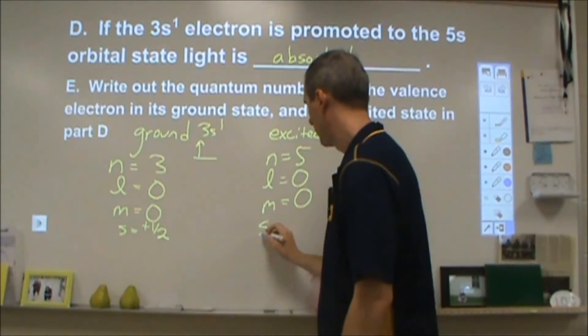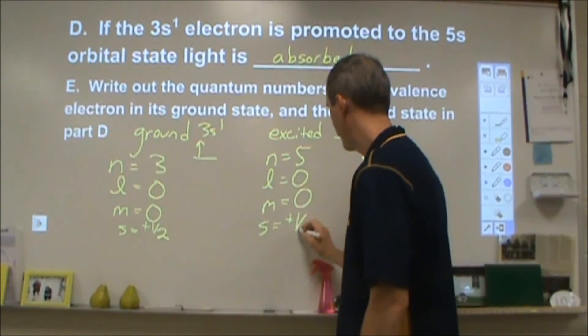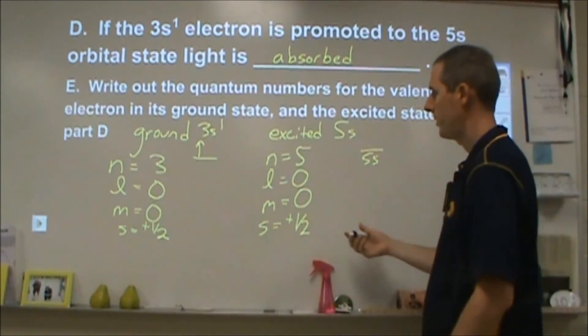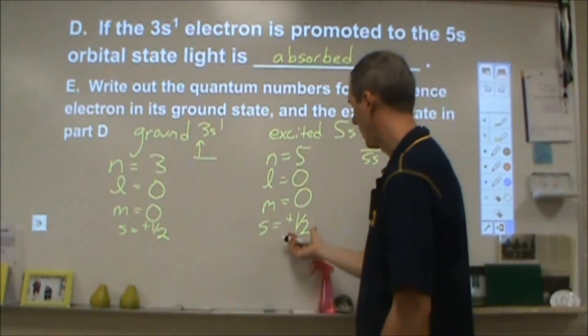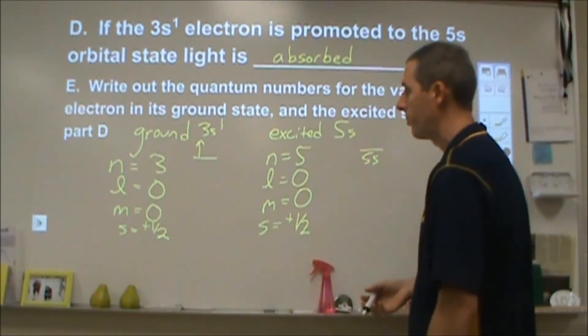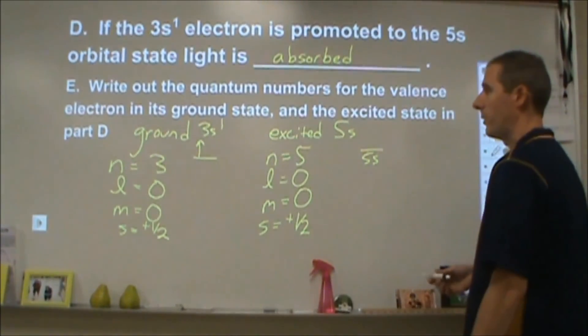So the spin, again, whatever you had picked previously, I'm not going to go through the restrictions on transitions for spin, which is a higher level concept than what we're going for here. But again, if you picked either plus or minus 1 half, that would have been sufficient.